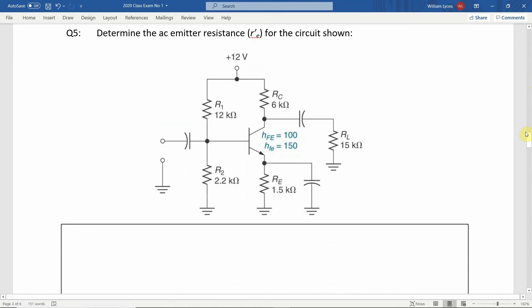In this question, we are given a circuit diagram for a common emitter amplifier, also known as a voltage divider bias amplifier, and we are asked to calculate the AC emitter resistance, referred to as R'E.